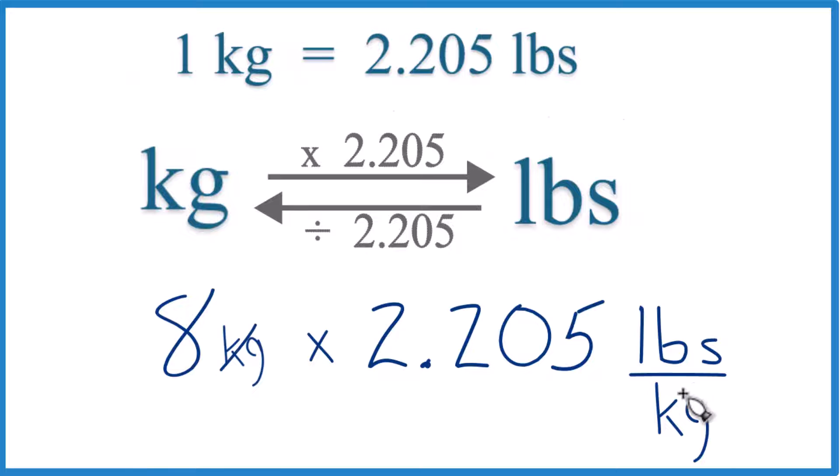We multiply kilograms on the top and bottom, they're gone. We're left with pounds. So really, we're just multiplying our eight kilograms by 2.205 pounds.